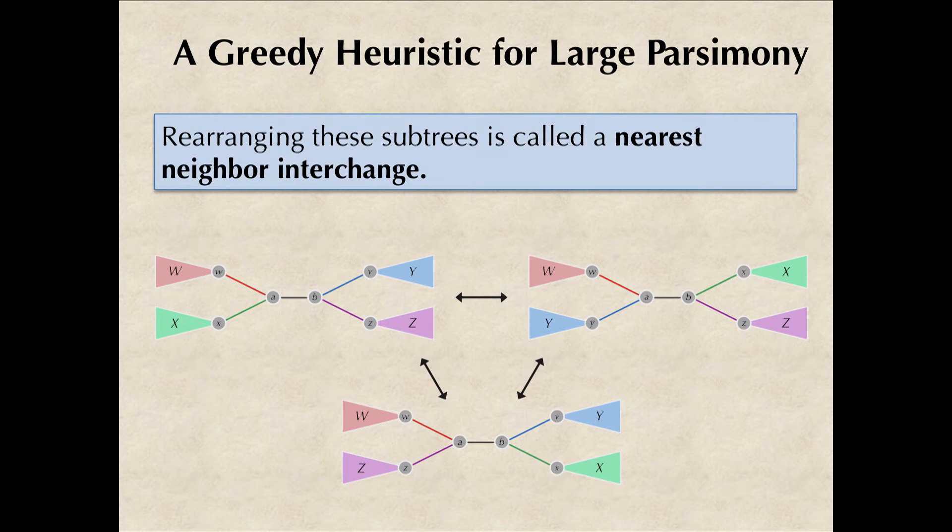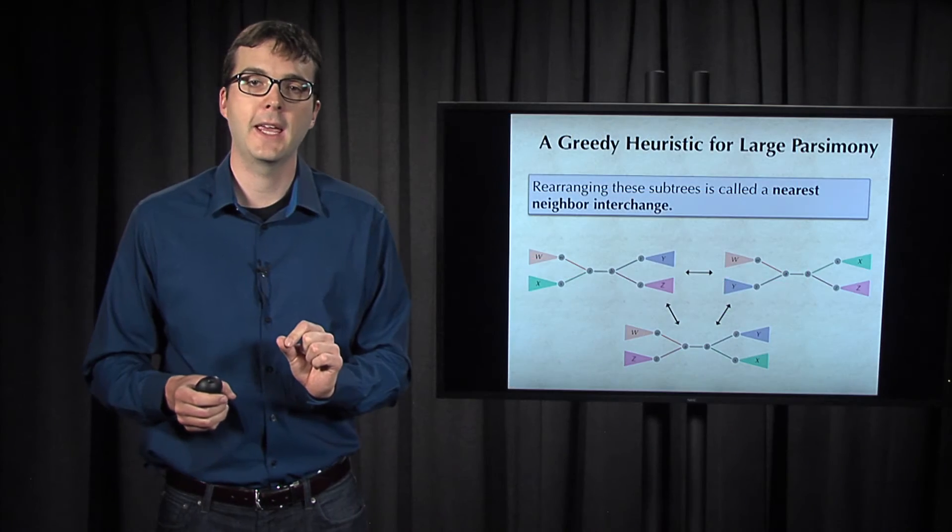There are three ways to then rearrange these four subtrees around that internal edge that connected A and B. So the operation in which we move from one of these trees to the other is called a nearest-neighbor interchange for this internal edge connecting A and B.